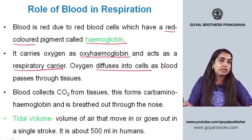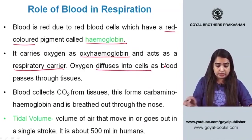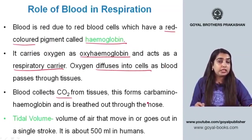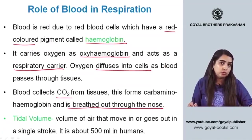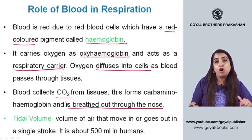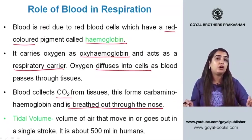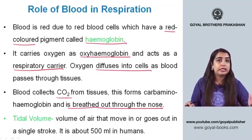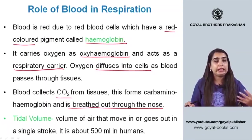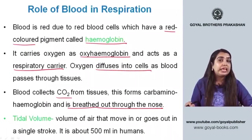Oxygen diffuses into cells as blood passes through tissues — groups of cells. Blood also collects carbon dioxide from tissues, forming carbaminohemoglobin, which is then breathed out through the nose. So during inhalation, hemoglobin acts as oxyhemoglobin passing oxygen to cells, and during exhalation, carbon dioxide leaves as carbaminohemoglobin.